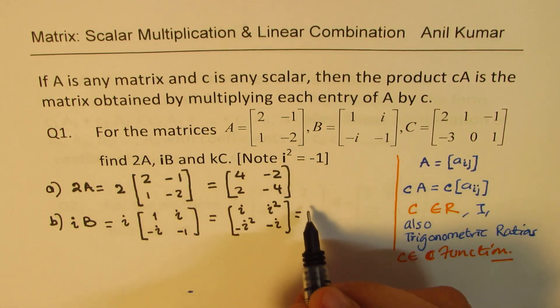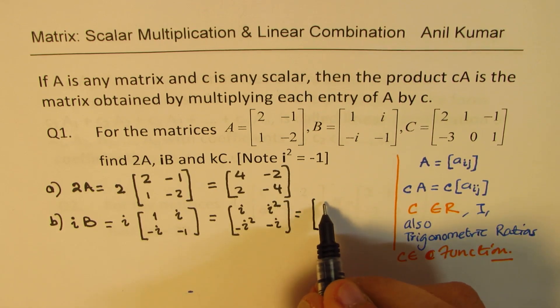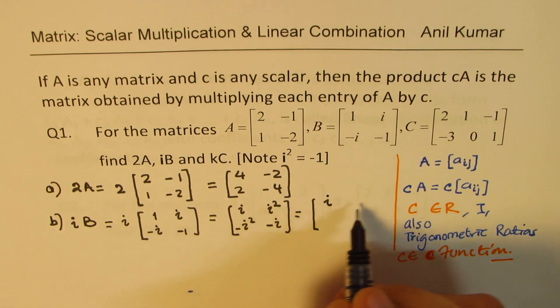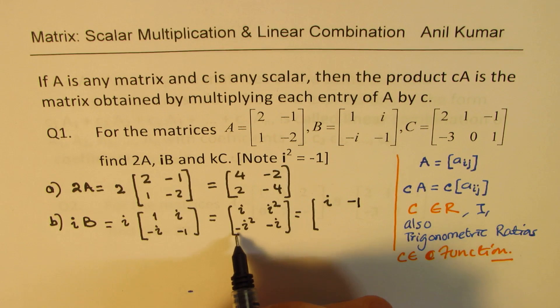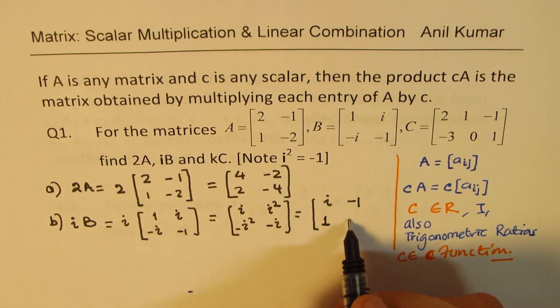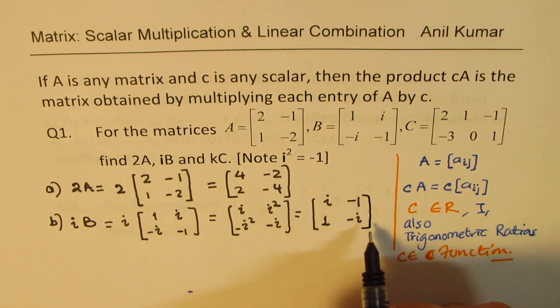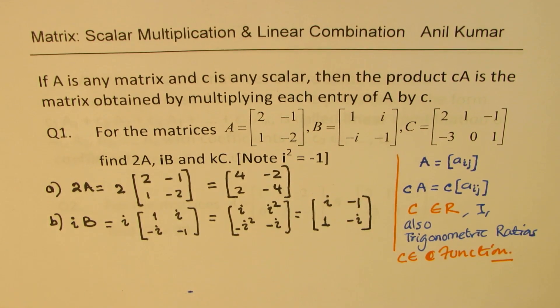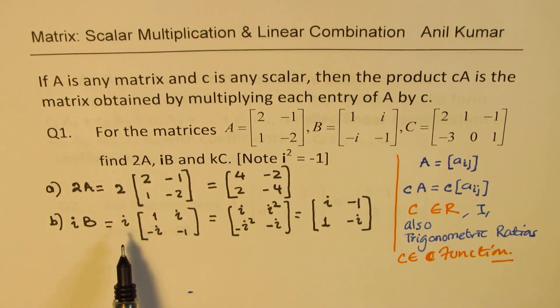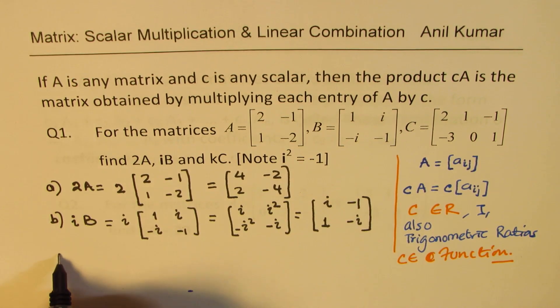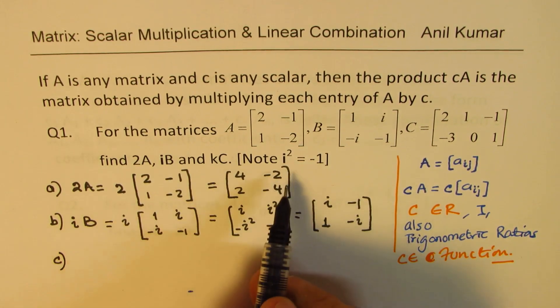This is what you get. Now you could simplify this since i squared is minus one. So I'll write this as i and that becomes minus one, this is minus of minus one which is plus one, and that remains as minus i. So clearly C is not a constant, C could be anything. But scalar means like stretching, multiplying each element.